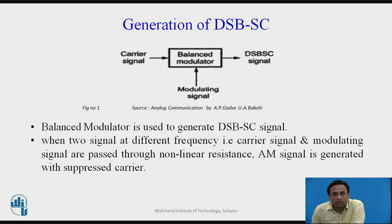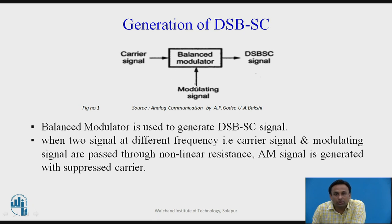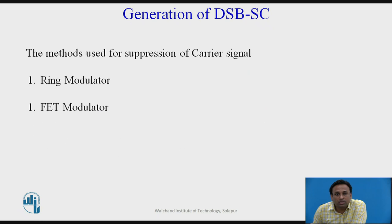To generate a DSBSC signal, a balance modulator is used, as shown in the block diagram. When two different signal frequencies — the carrier signal and the modulating signal — are passed through a balance modulator, the DSBSC signal is produced. There are two methods used to suppress the carrier: the ring modulator and the FET modulator. In this lecture, we will see in detail how the ring modulator suppresses the carrier.